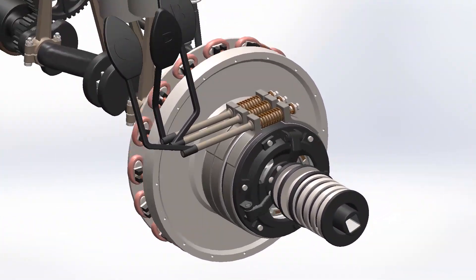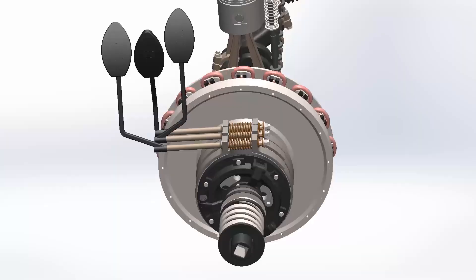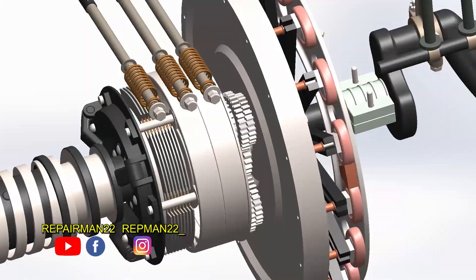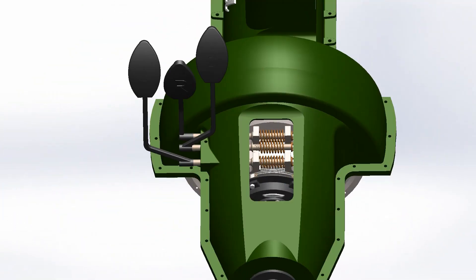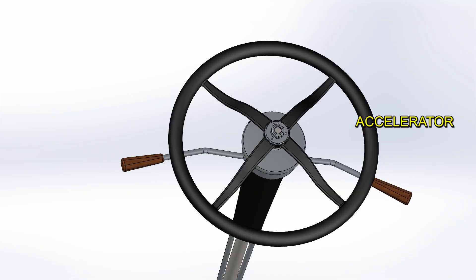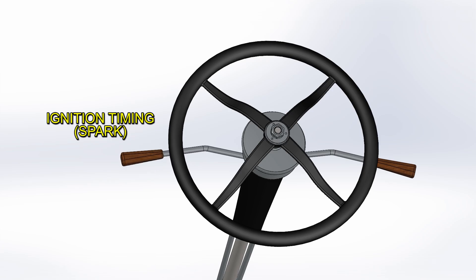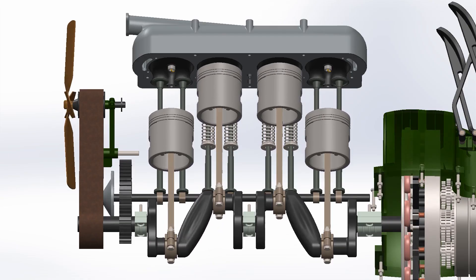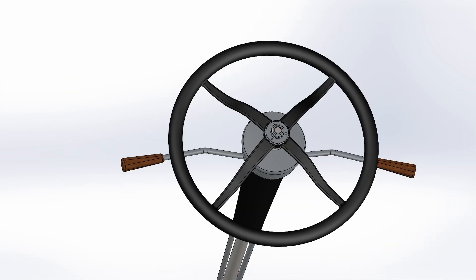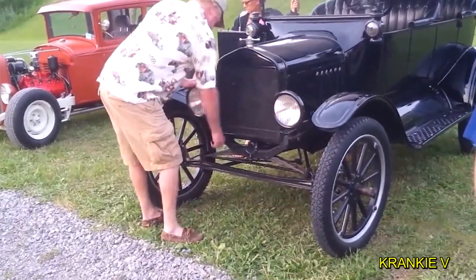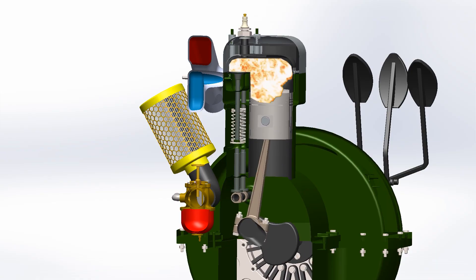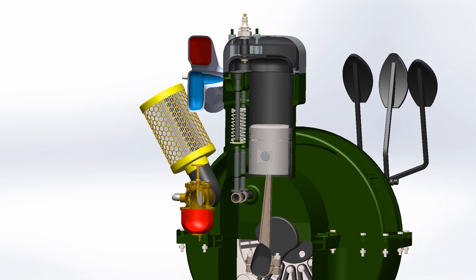The Ford T only had two forward gears and one reverse, quickly driven by pedals and a handle. The gear system is of the planetary type, distributing the forces more evenly and increasing durability. The pedal on the right was to actuate the brake. The accelerator was through the right stick going up or down. The ignition timing was manual, done through the left stick which varied the degrees of spark firing. Although the T was designed for gasoline, this also allowed it to work with other fuels. It was very important to lower timing to a minimum before starting the engine with the crank — otherwise the mixture would ignite before the piston turns, possibly resulting in the operator's broken arm.